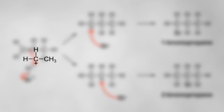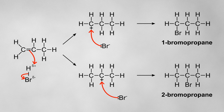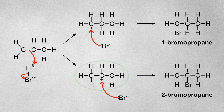For this reason, primary carbocations are the least stable, followed by secondary carbocations, and then tertiary carbocations are the most stable. So, if we look at our carbocation intermediates, we can see that the secondary carbocation is the most stable of the two, so it'll be more likely to form. This means that 2-bromopropane will be our major product, and 1-bromopropane will be our minor product.